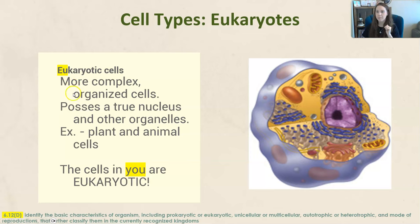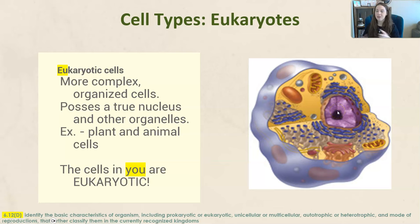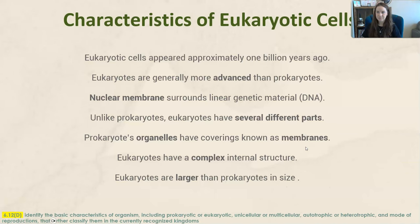Eukaryotic cells are much more complex, organized cells. They possess a true nucleus at the center and also have other organelles. The cells in you are eukaryotic — you are not made of one cell; you're multicellular. You have a whole bunch of cells, and they are all eukaryotic cells that contain your genetic information along with other organelles that help the cell do its jobs.